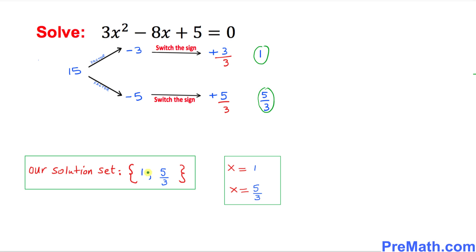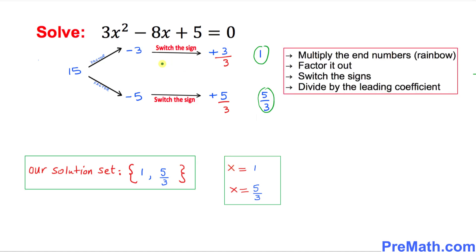We can write the answer in both notations — either way is fine. Let's recap our steps: first, we created a rainbow by multiplying the end numbers. Then we factored that product into two numbers. We switched the signs, and finally we divided those numbers by the leading coefficient.